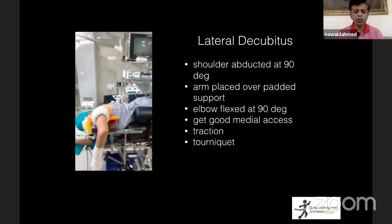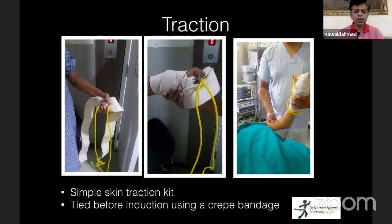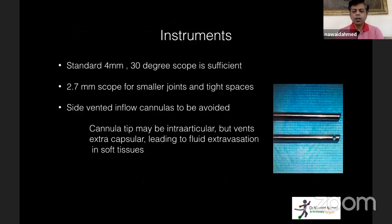We use traction of about two to three kilograms. On world technology day, I'm showing my innovation — a simple skin traction kit where I have the patient hold it before induction, then tie it up with a crepe bandage. For instrumentation, a standard 30-degree scope used for shoulder or knee arthroscopy is fine. Sometimes a 2.7 mm scope is needed for adolescent patients and tight spaces.